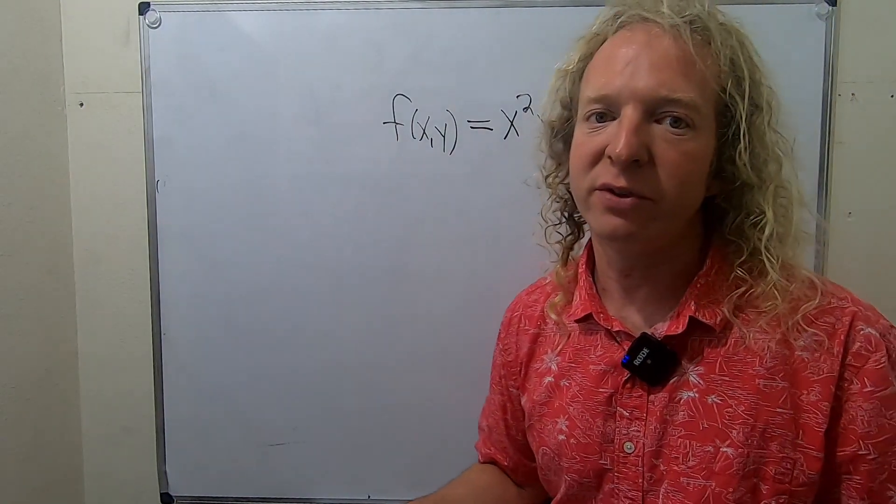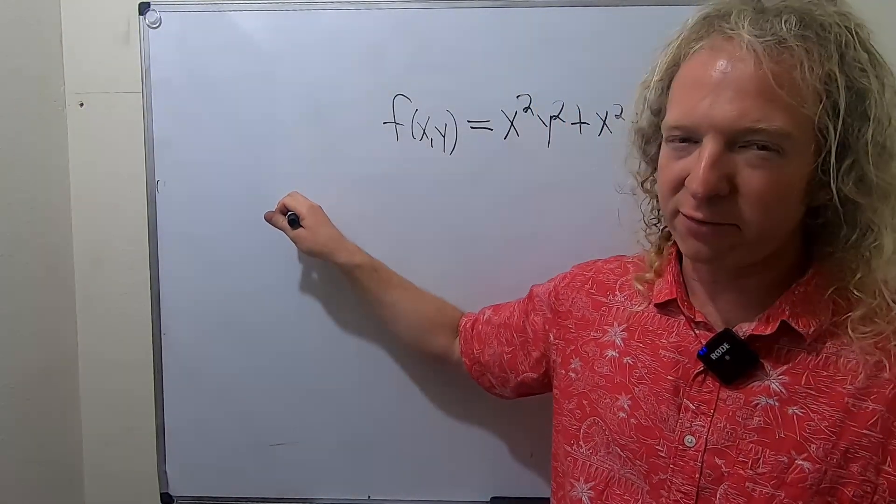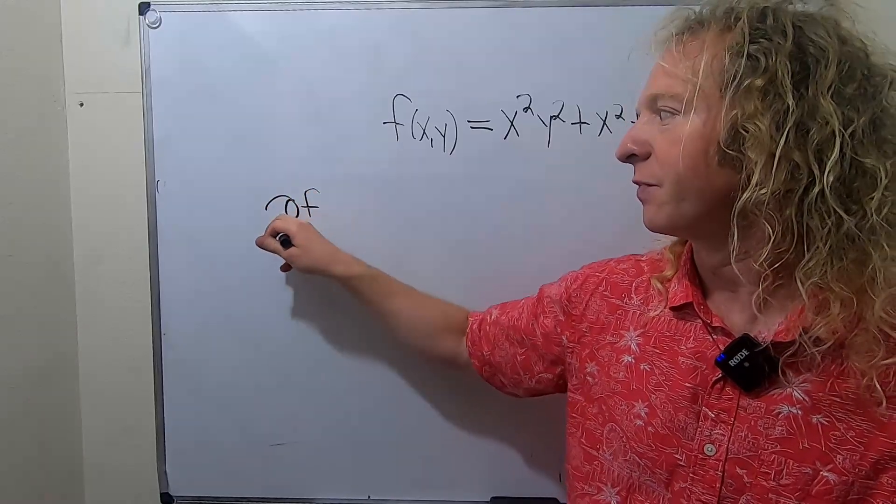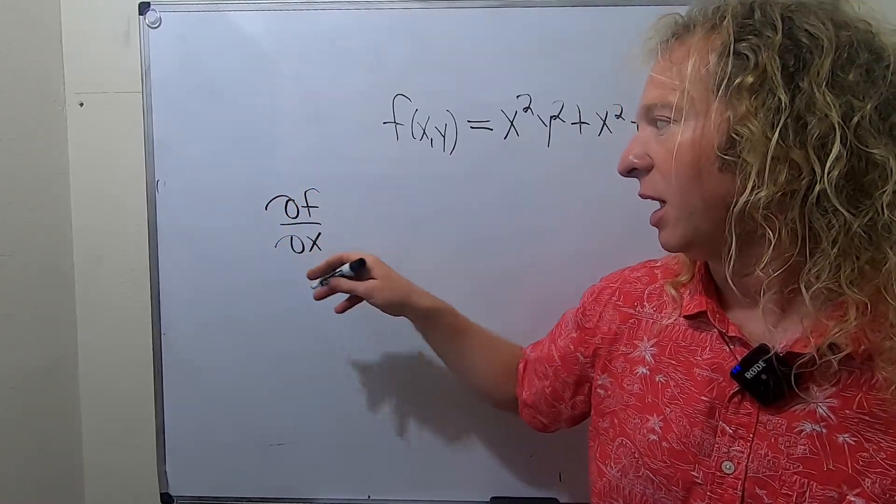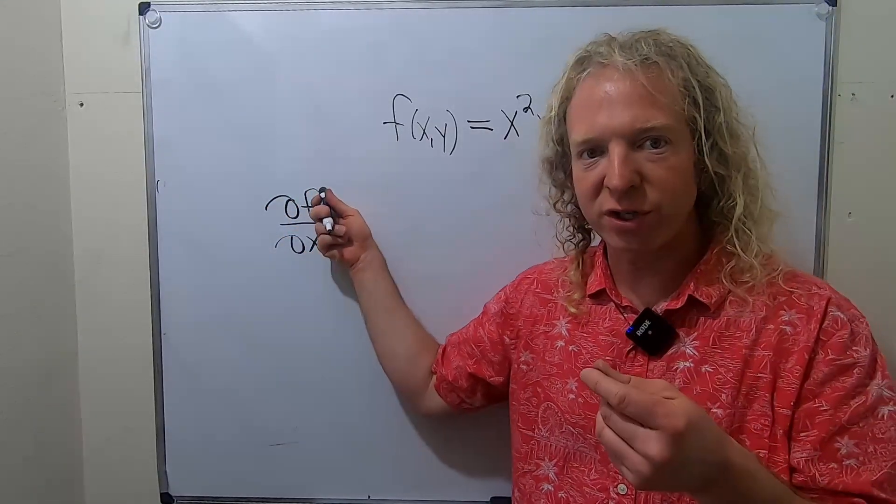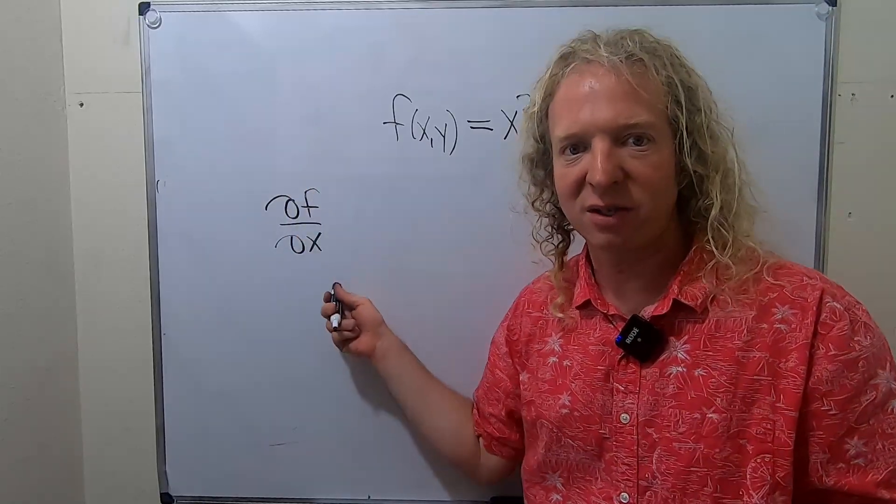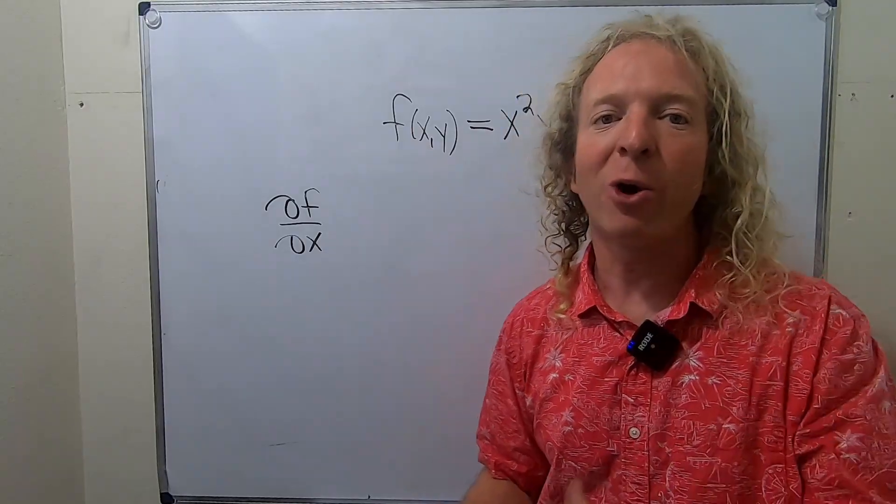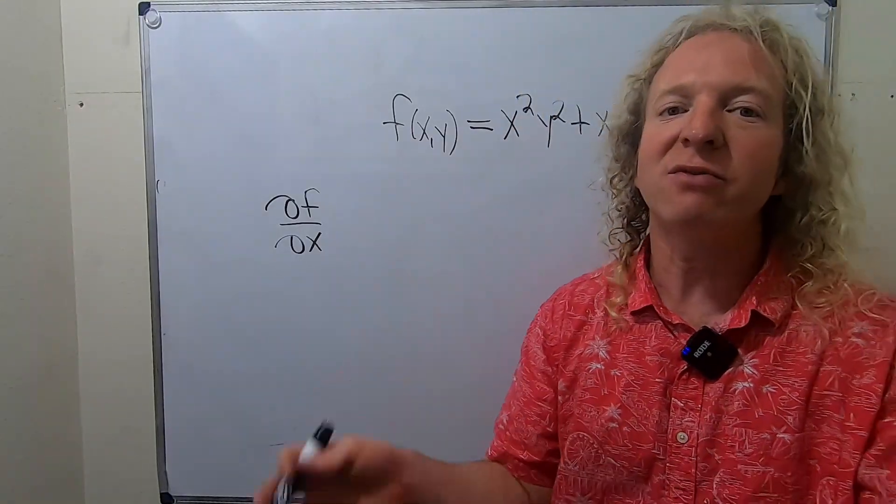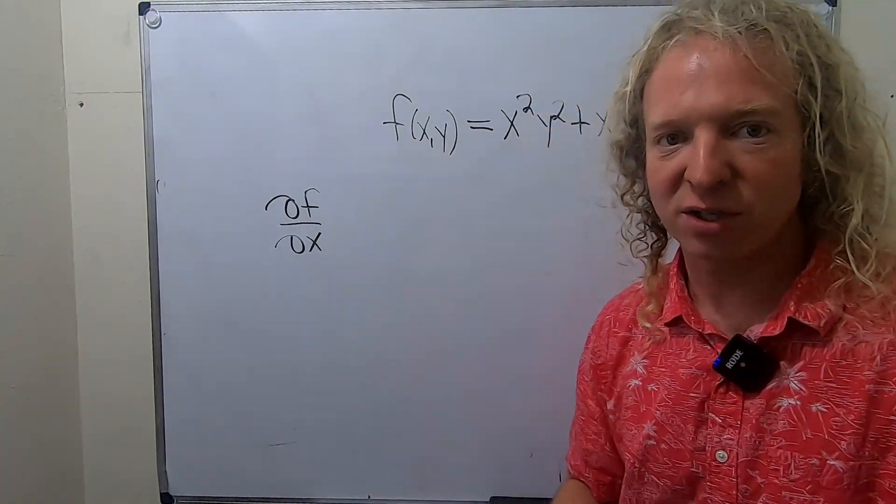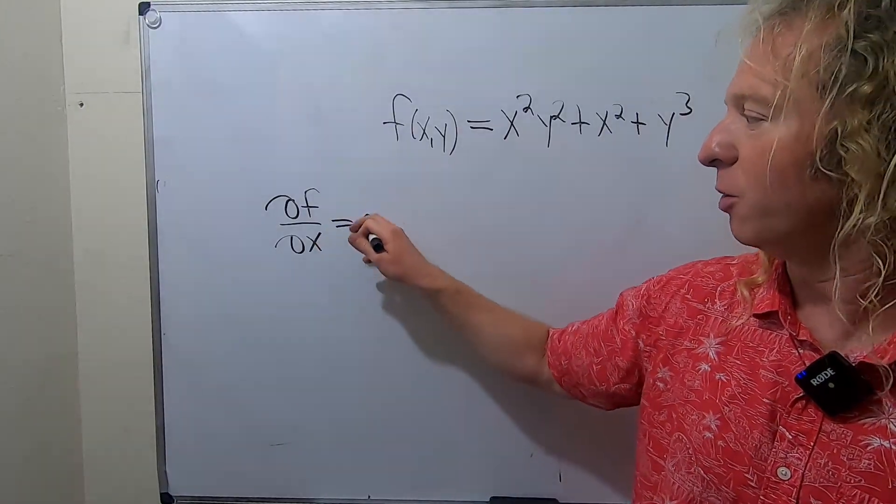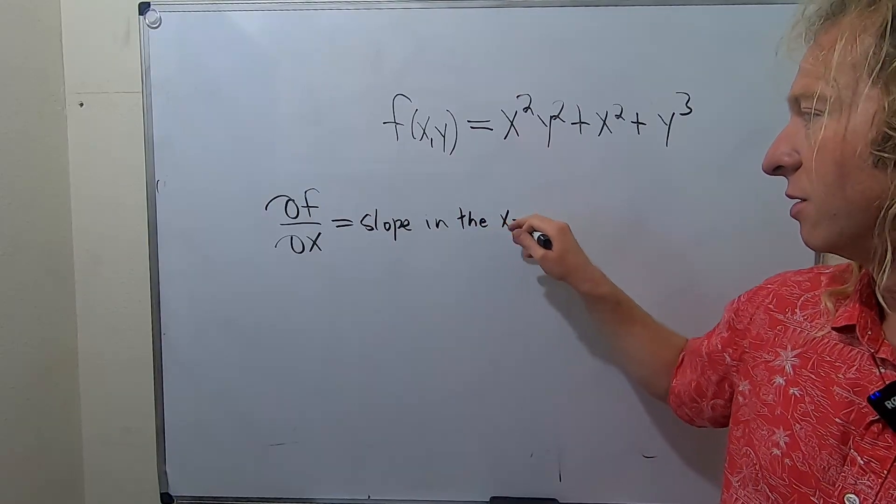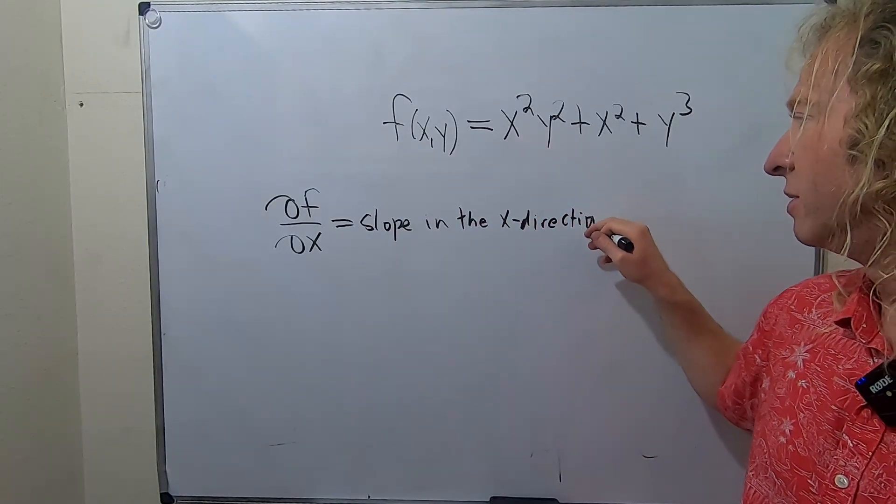So what are partial derivatives? The partial derivative of f with respect to x is written ∂f/∂x. It's the rate of change of your function with respect to x when y is fixed, or you can think of it as the slope in the x direction. That's intuitively what it means.